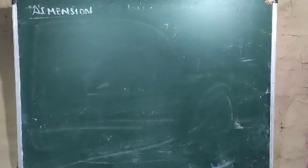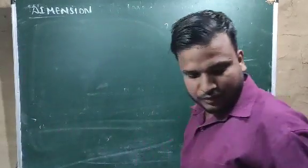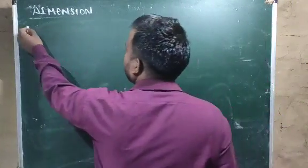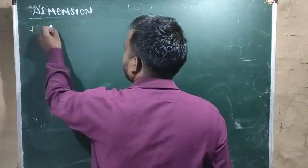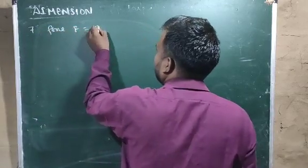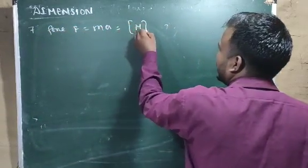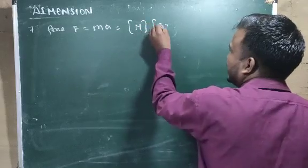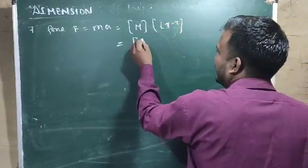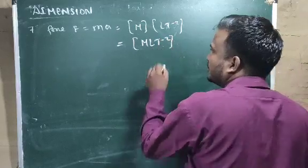Now let us see the dimensional formula for force. Number 7: force F equals M × A. The dimensional formula for mass is M and for acceleration is L T⁻², so the result will be M L T⁻².